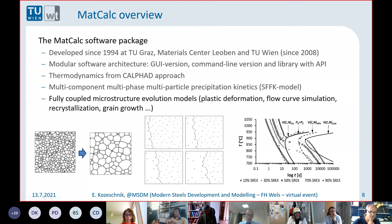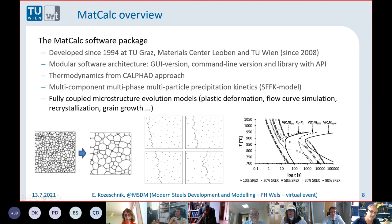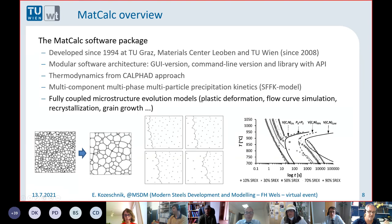On this last slide you can see the recrystallization-precipitation interaction diagram, where the lines indicate different degrees of recrystallization, starting with 10 percent going up to 90 percent. The C-curve here describes vanadium carbonitride precipitation from 5 to 90 percent. We can see that this interaction very strongly retards and almost completely avoids recrystallization. We have published that work, though there's not enough time to discuss it today.